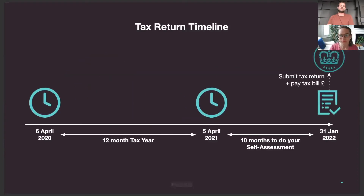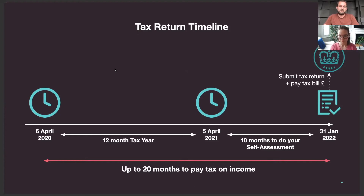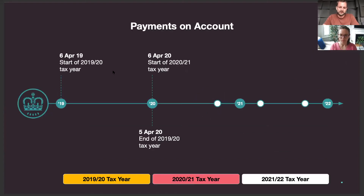So firstly, what are payments on account? As a sole trader, you actually have quite a long time to pay your tax bill after the end of the tax year. The bill for the tax year that ended 5th April 2021 is actually due 31st January 2022 — meaning work done back in April 2020 isn't due for a full 20 months later. This makes it really hard to save the right amount, so HMRC have a solution, albeit slightly imperfect, which is payments on account.